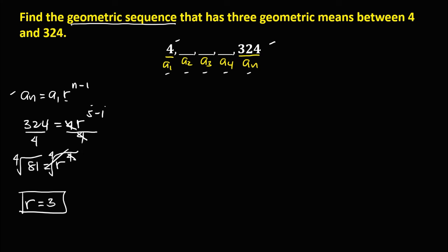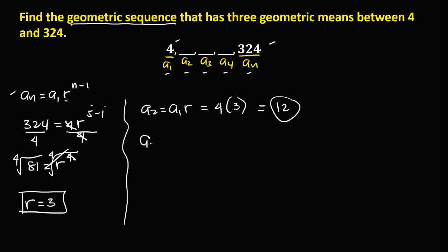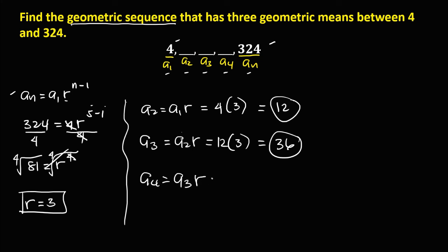Since we now have the common ratio, we solve for the three geometric means between positive 4 and positive 324 by multiplying the common ratio to every term. For a sub 2: a sub 1 times r, so 4 times 3 equals positive 12. For a sub 3: a sub 2 times r, so 12 times 3 equals positive 36. For a sub 4: a sub 3 times r, so 36 times 3 equals 108.